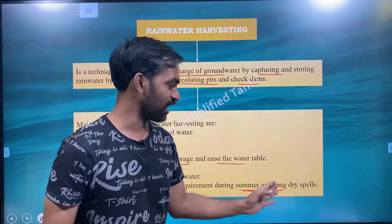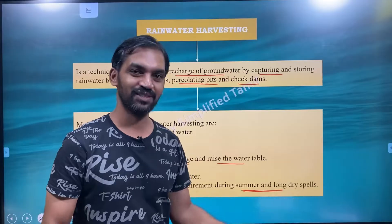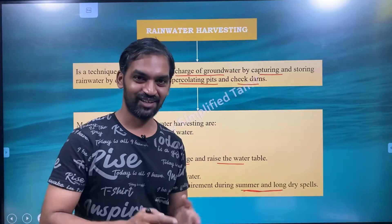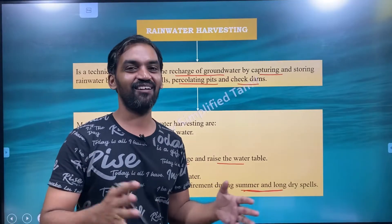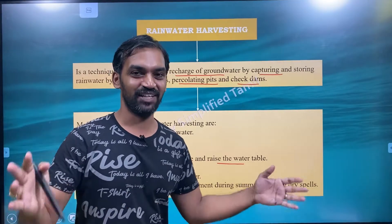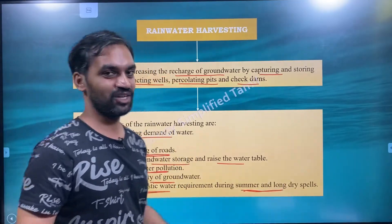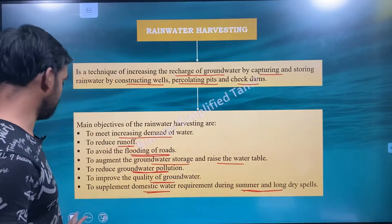To supplement domestic water requirement during summer and long dry spells. A dry spell is a short dry period. During a dry period, rainwater harvesting helps to overcome the water shortage.